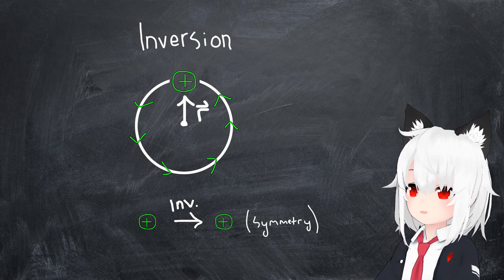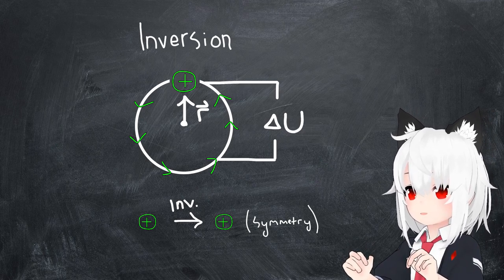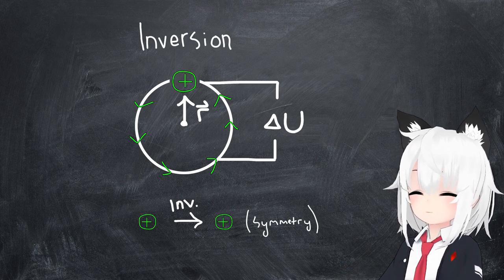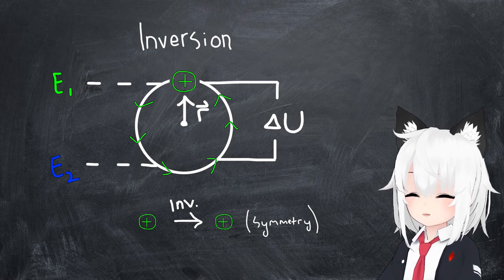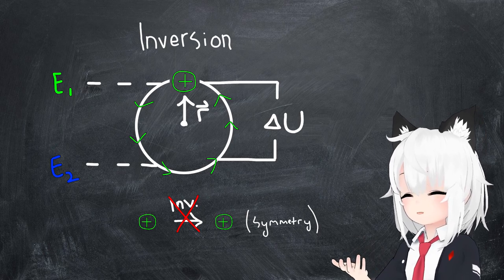But this assumption can very easily be manipulated by, for example, applying a potential energy difference across the diameter of the circle. This would result in a change in the allowed energy states on opposite ends of the circle, breaking the symmetry between these particles.